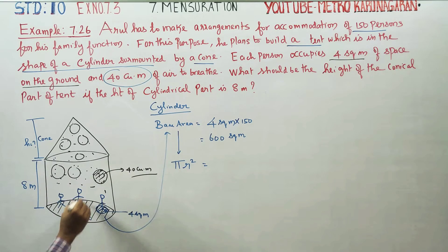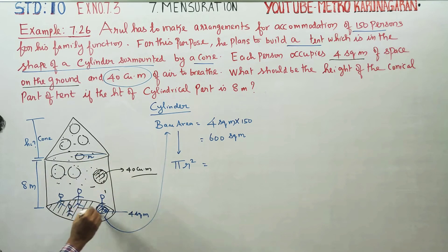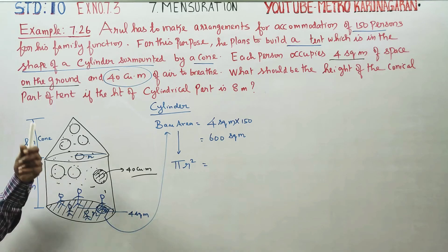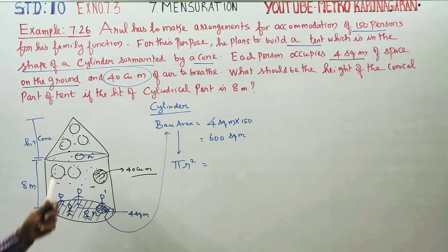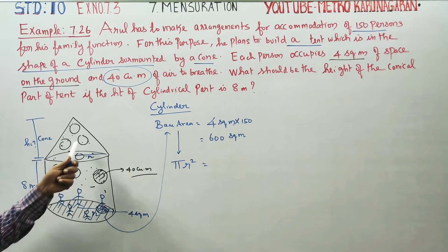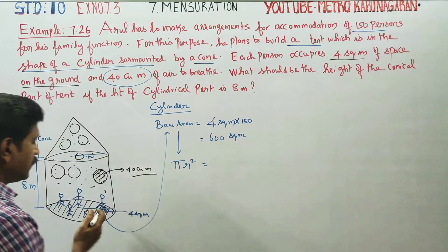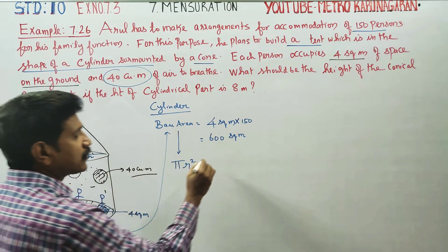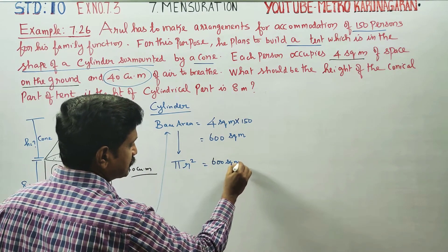We identify the radius R. There are two heights: h1 for the cylinder and h2 for the cone. The cylinder height h1 is 8 meters, and we need to find the cone height h2. Pi r squared is equal to 600 square meters.